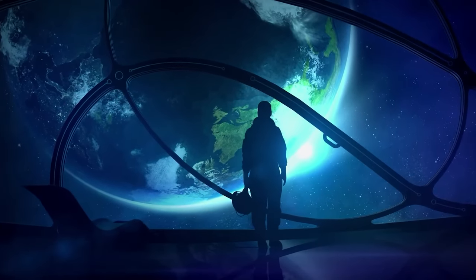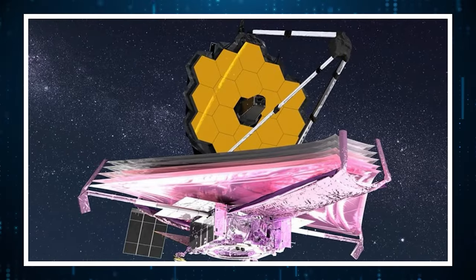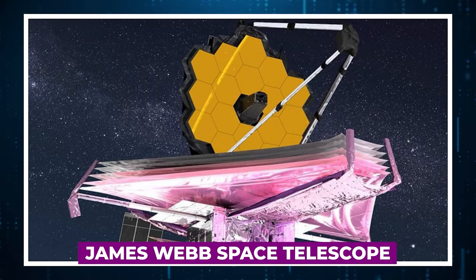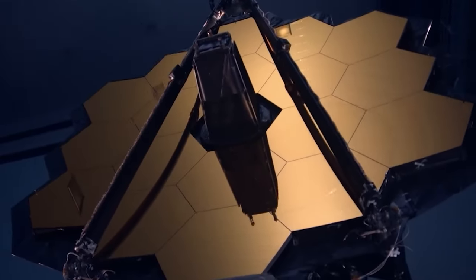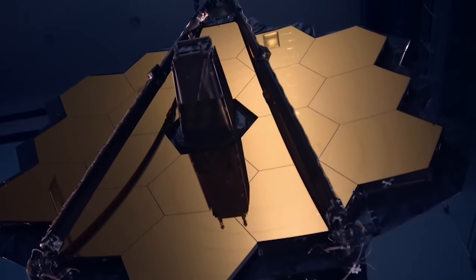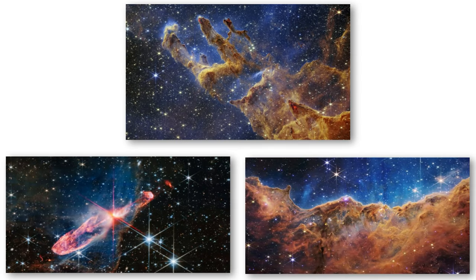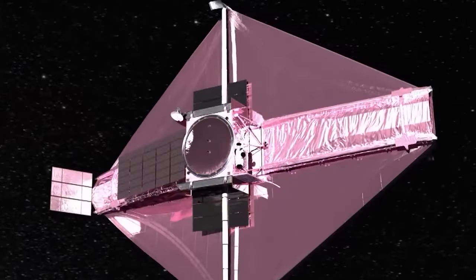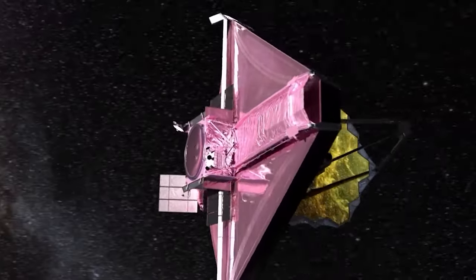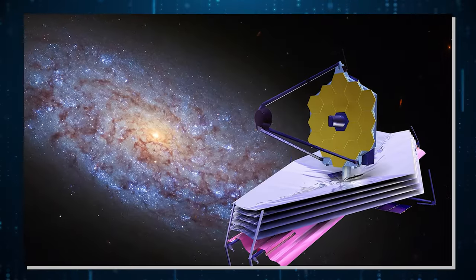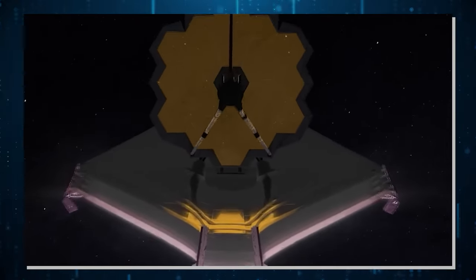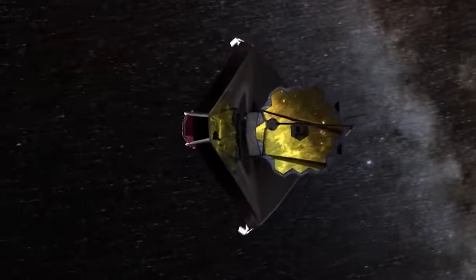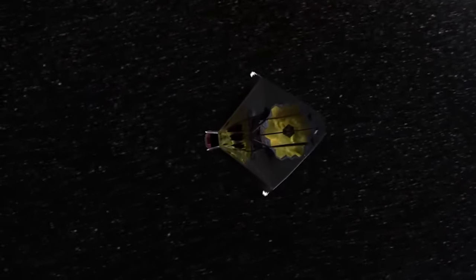Since the beginning of exoplanet discoveries, scientists have eagerly awaited the operational phase of the James Webb Space Telescope, anticipating the wealth of information it will unveil. Finally, the age of the James Webb Space Telescope is upon us, marking a new era of thoroughly examining exoplanetary atmospheres. The JWST boasts the capability to analyze the spectra of exoplanet atmospheres and identify their components. However, despite its immense power, certain targets offer more favorable conditions for transmission spectroscopy than others.